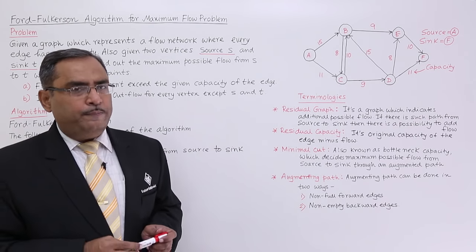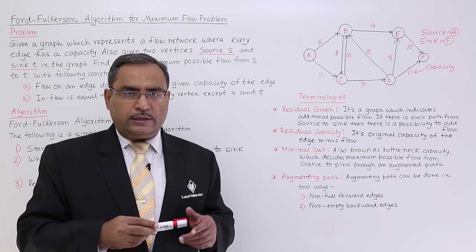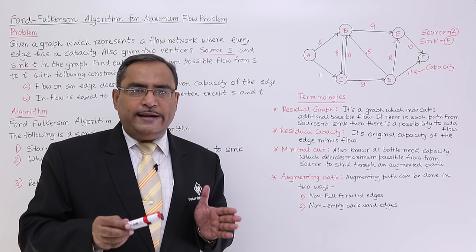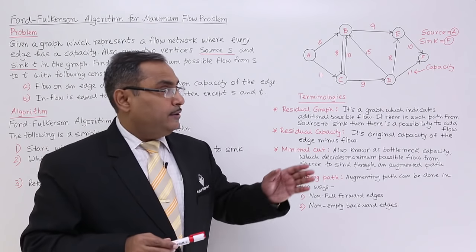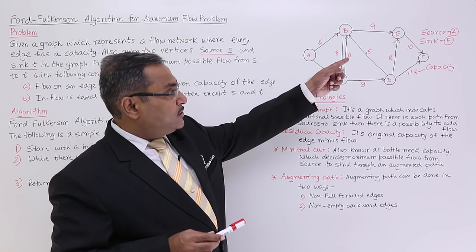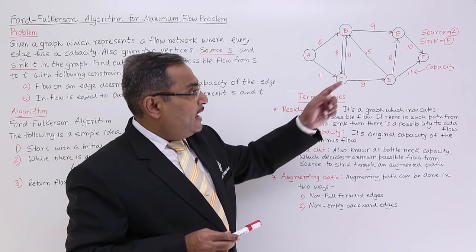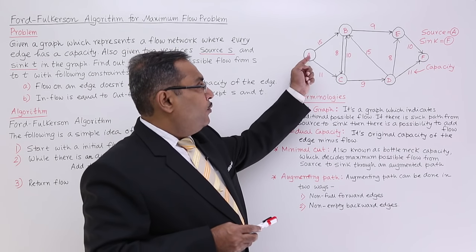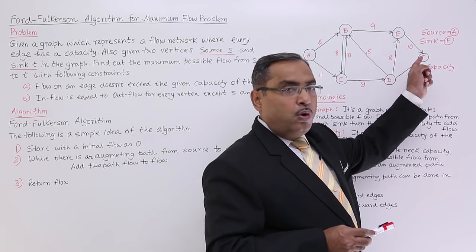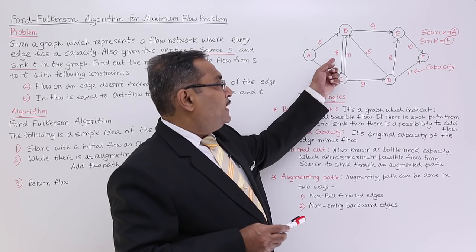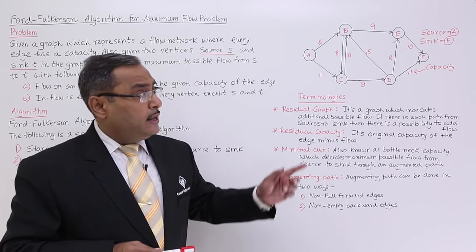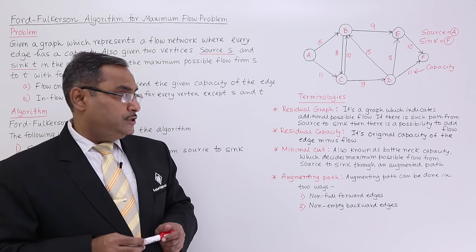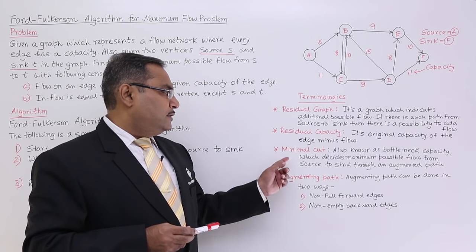While discussing the algorithm, we might be facing different terminologies. Let me go through the terminologies first. Before that, let us see how one network looks. This is the network: here A is the source and F is the sink or target. From A only the flow will come out, and to the sink only the flow will go in. These are the respective flows we are having in this directed graph, with a head and tail for each and every edge.